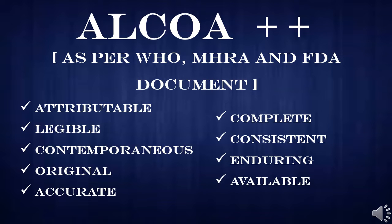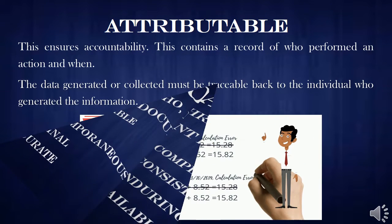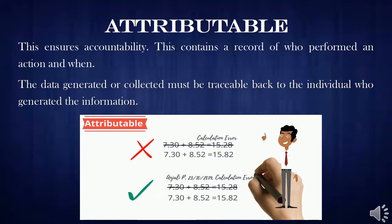Now we will see what ALCOA+ is. A stands for Attributable, L for Legible, C for Contemporaneous, O for Original, A for Accurate — whereas the plus symbol stands for Complete, Consistent, Enduring, and Available documentation. Here we will be seeing each component in detail.